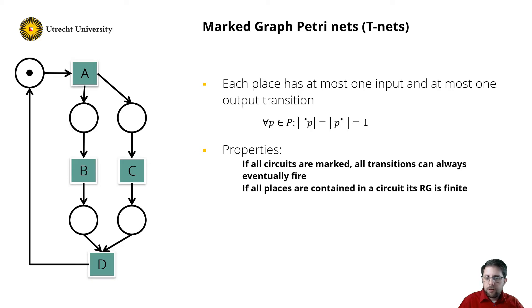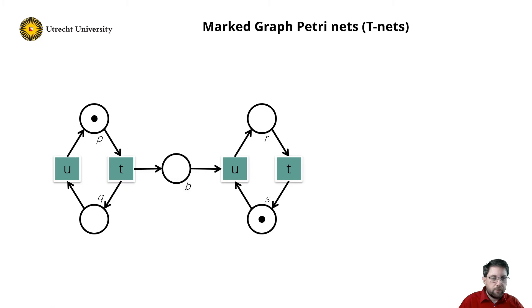But marked graphs are a bit more difficult, so there is also a warning to this net, because cycles quickly lead to infinite reachability graphs. To give an example, consider this net. It is a marked graph, as each place has one input and one output place.